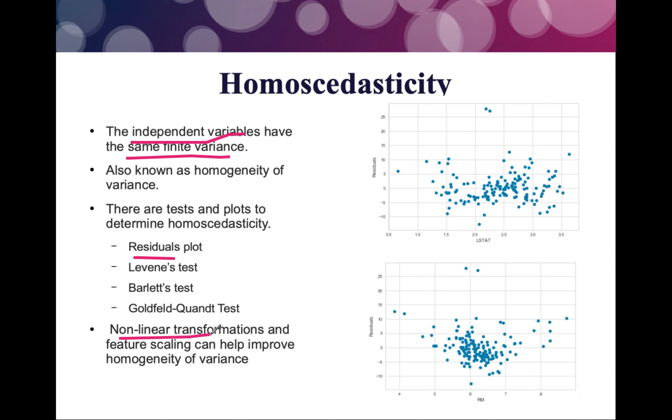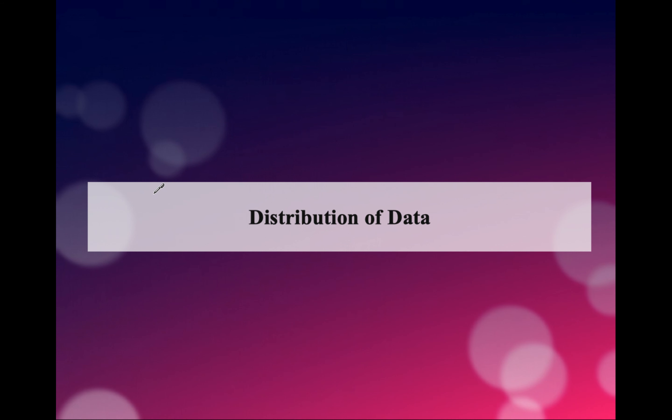Non-linear transformations and feature scaling can improve this particular feature. We'll be seeing how we manage this problem and how we cater it using different feature engineering techniques. As of now, I'm just giving you a general idea of how things work. This thing of homoscedasticity is also called homogeneity of variance, that means similarity of variance in simple terms.